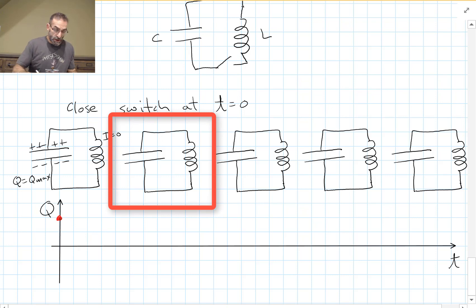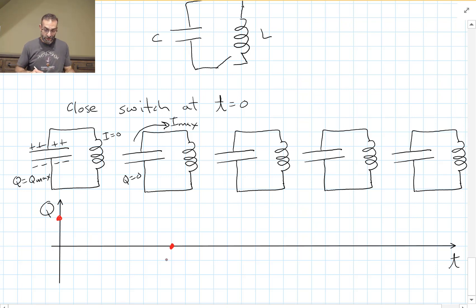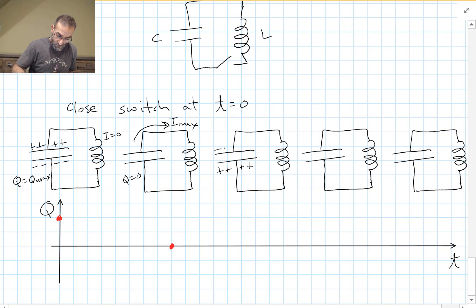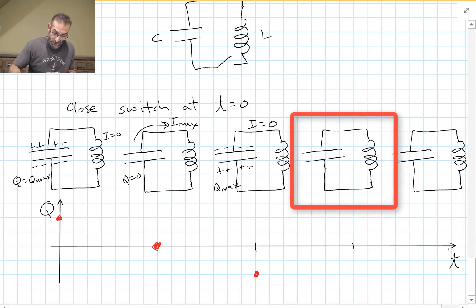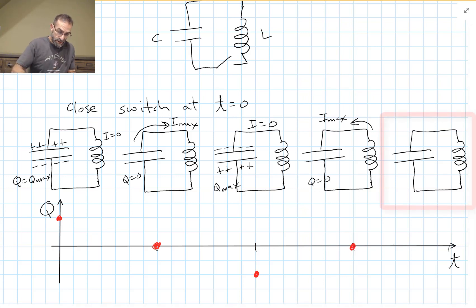Some time later, the charge on the capacitor has gone to zero and we have our maximum current flowing — of course, zero charge on the capacitor. The current flowing will charge the capacitor up again, but with the plates oppositely charged. So I can plot this condition: the charge is maximum but the charges on the plates are reversed. At some time later, I'm back to q equals zero and I've got my maximum current flowing, but in the opposite direction. And then I'm back to where I started.